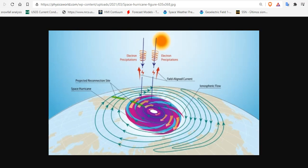Now, the team of scientists from China, the USA, Norway, and the UK used observations made by four defense meteorological satellite program satellites and a 3D magnetosphere modeling to produce an image.